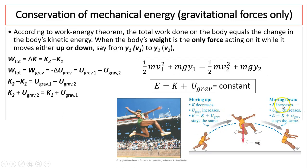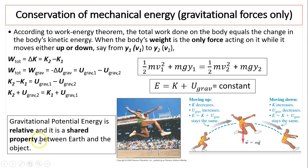As you move down, K increases and U decreases — E doesn't change. One thing you need to know: gravitational potential energy is relative; you can set any point as the zero point. Also, gravitational potential energy is a shared property between Earth and the object. That means without Earth, the object will have no potential energy.